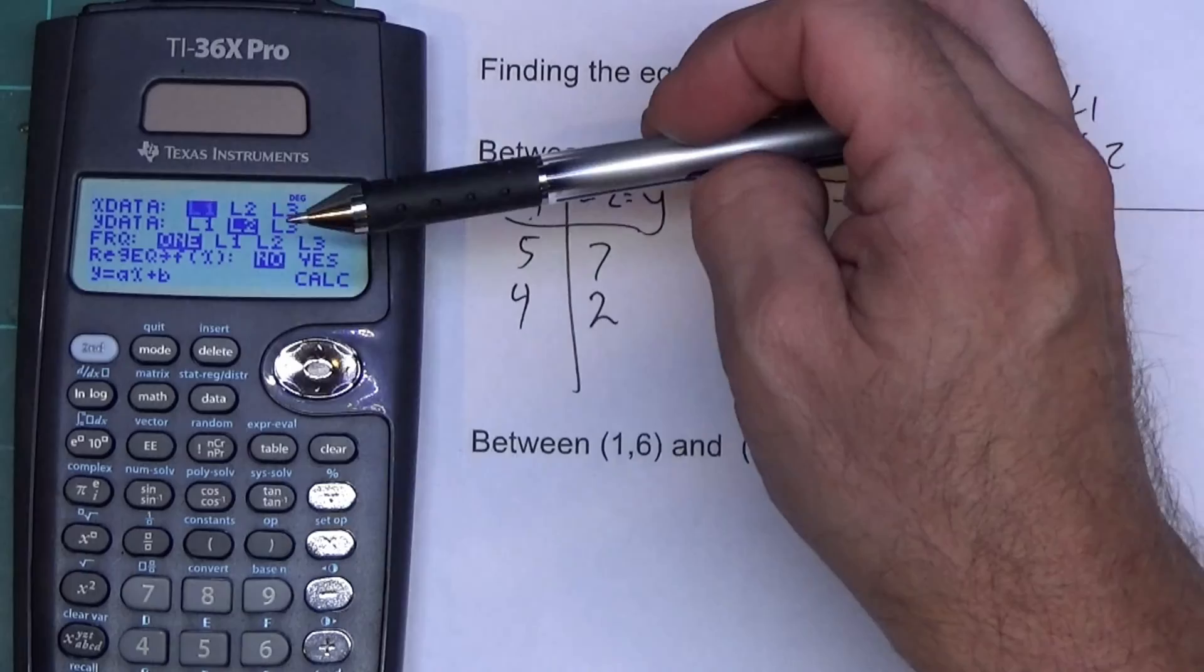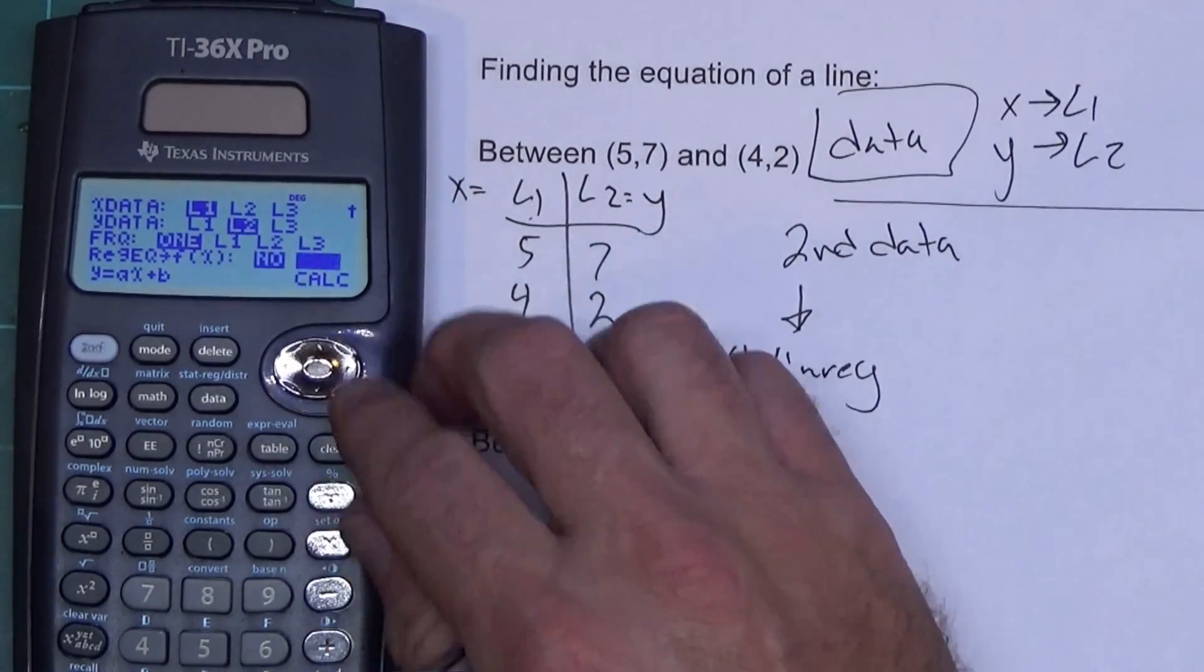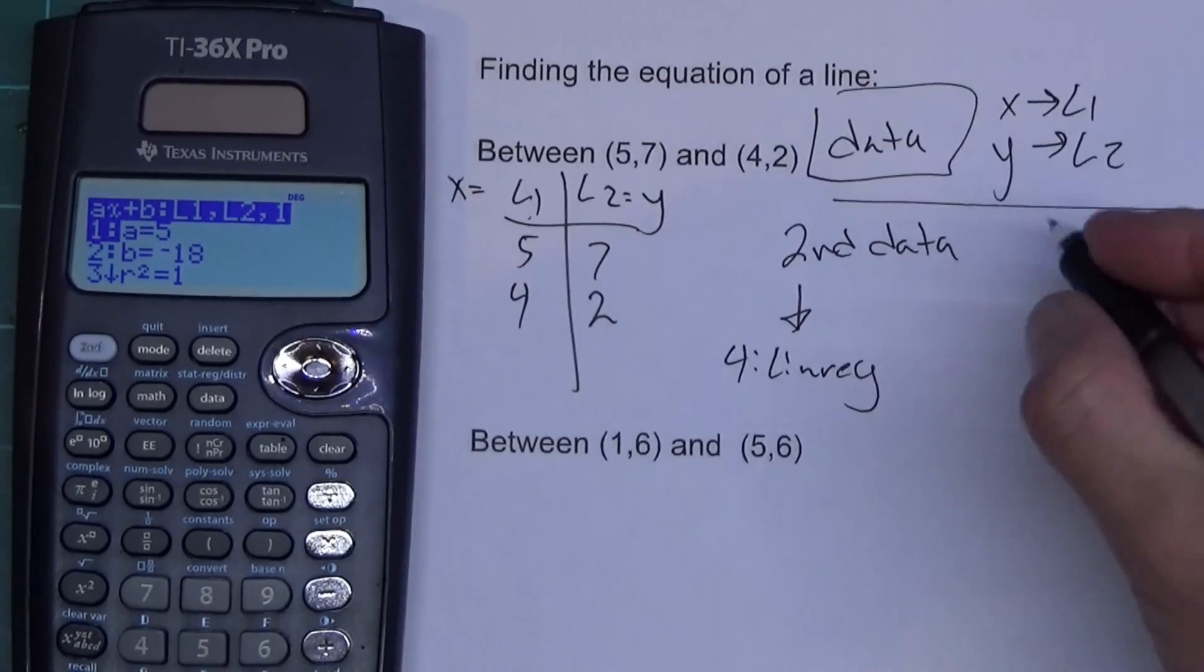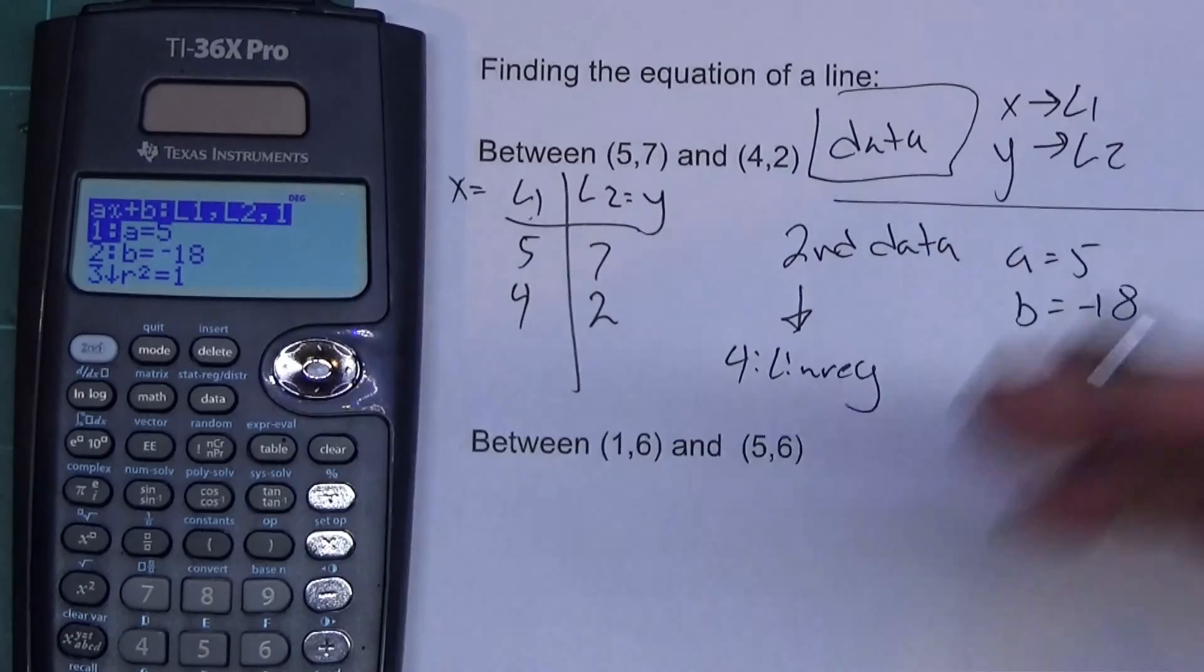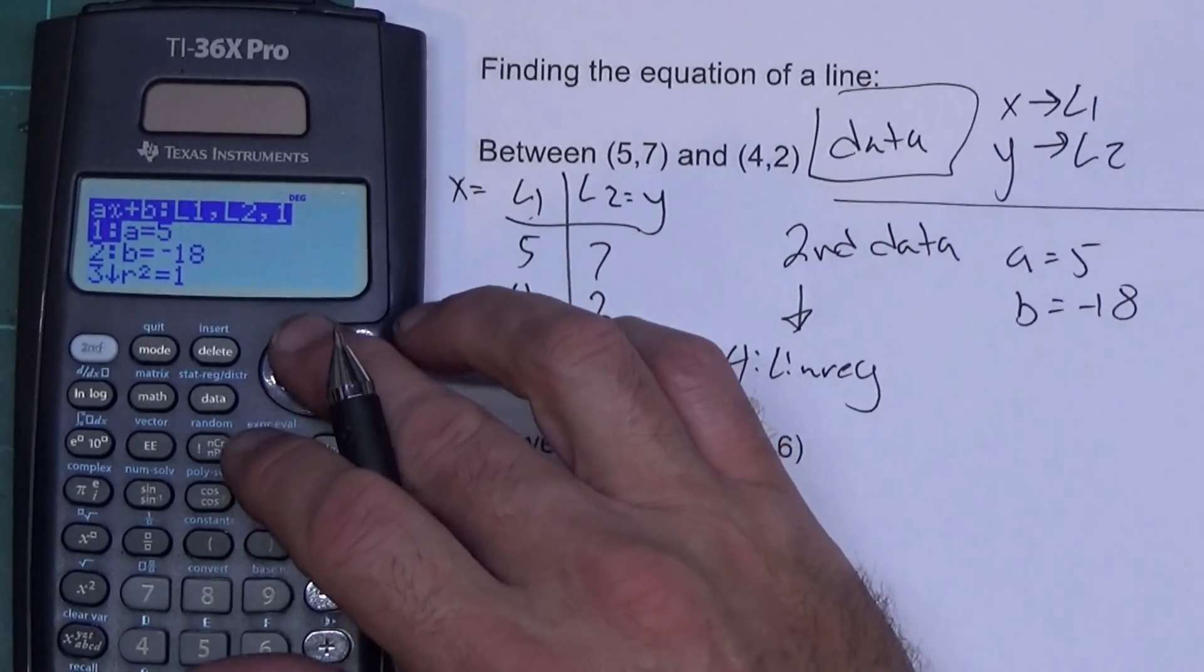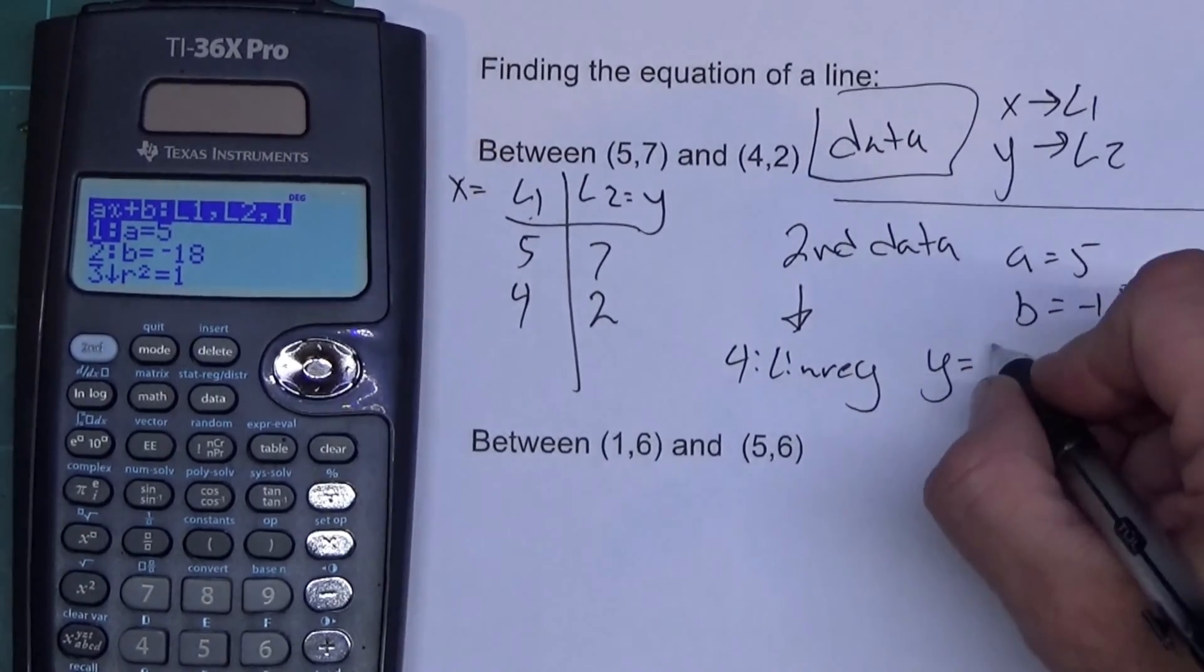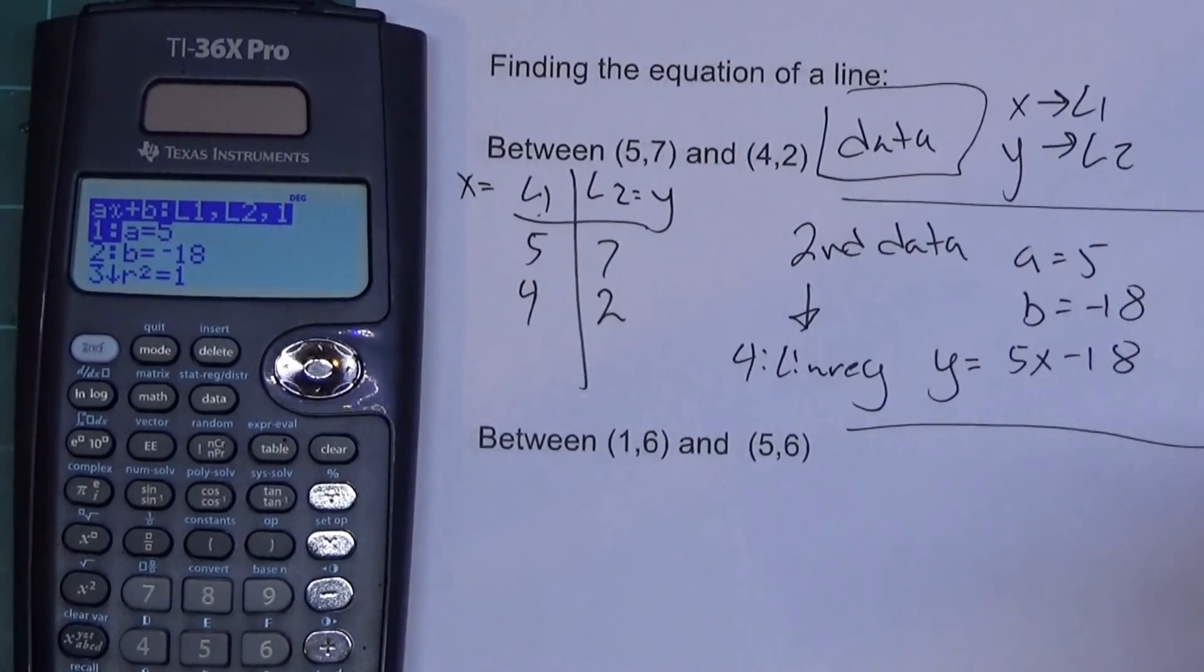Okay, so it tells me a equals five, b equals negative 18. So the equation of my line, and we'll talk about what r and r squared is in a future video, that doesn't matter for this video. So the equation of the line is Y equals 5X minus 18. That's real nice and easy to do.